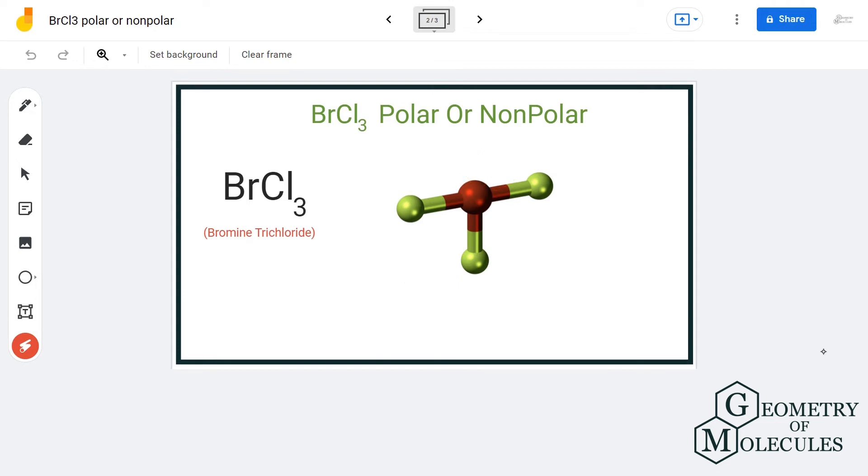If there were no two lone pairs here, the chlorine atoms would have spread out evenly and there wouldn't have been any uneven distribution of charges. But as there are two lone pairs on the central atom bromine, there can be two poles formed in this molecule.